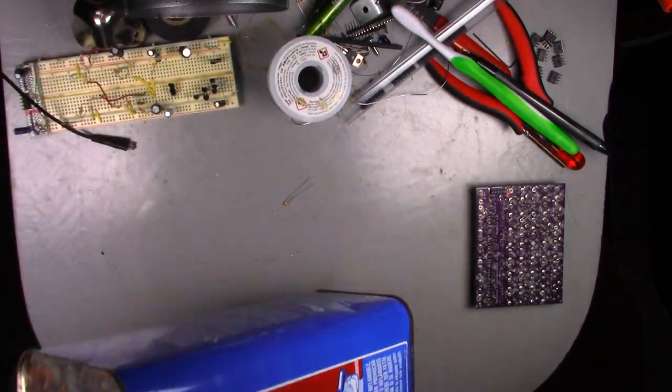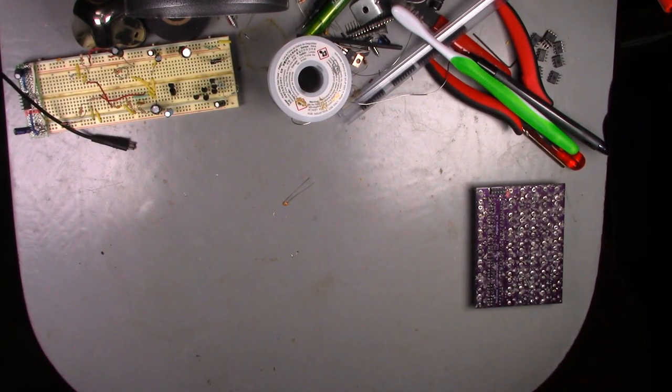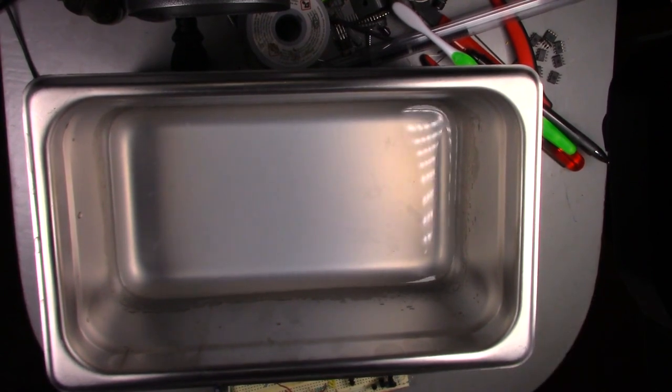Not only is it a cheap and effective solvent, you also find out if you have any cuts on your fingers when you handle the wet PCB. If an ethanol based solvent is not available, I've used isopropanol with success as well.